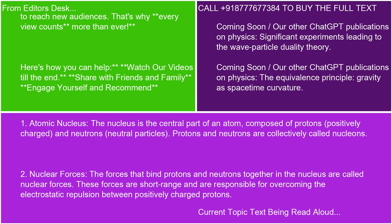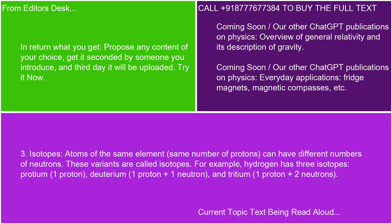3. Isotopes. Atoms of the same element, with the same number of protons, can have different numbers of neutrons. These variants are called isotopes. For example, hydrogen has three isotopes: protium, with one proton; deuterium, with one proton plus one neutron; and tritium, with one proton plus two neutrons.